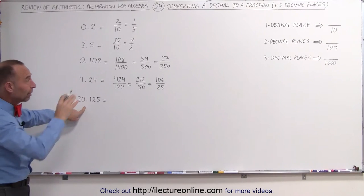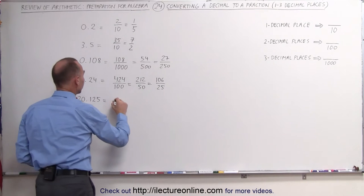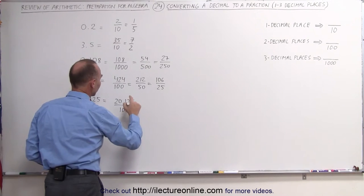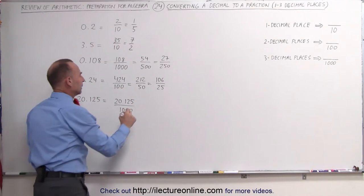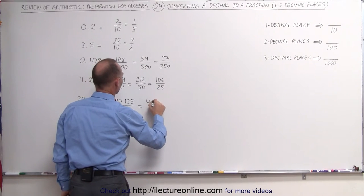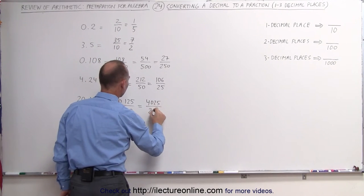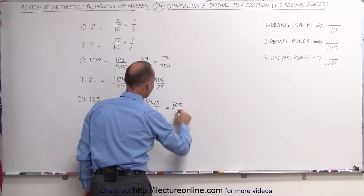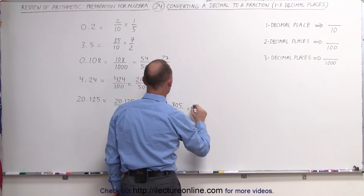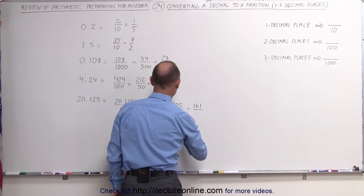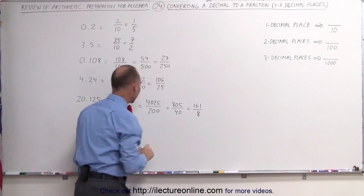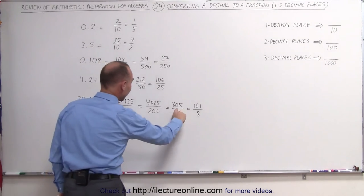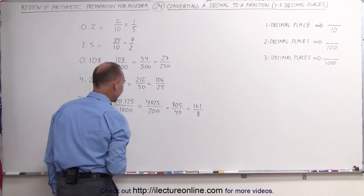Here we have three decimal places, so we write it as a fraction divided by 1,000. Get rid of the decimal point: 20,125 divided by 1,000. We can see they're both divisible by 5, so we write this as 4,025 divided by 200. Still divisible by 5: 805 divided by 40. Still divisible by 5: 161 divided by 8. That would be the final answer, assuming I did not make any mistakes dividing by 5 — and it looks correct.